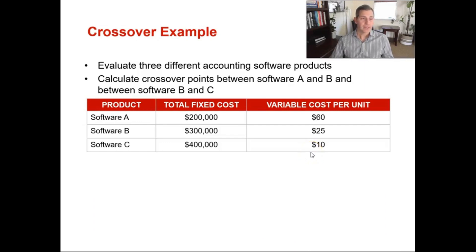Let's do an example together. We're going to evaluate three different accounting software products and calculate the crossover points between software A and B, and then between B and C. Software package A has a total fixed cost of $200,000 and a variable cost per unit of $60. Software B costs $300,000, but with some nice perks so you don't need as many people, and your variable costs are $25. Software package C has $400,000 in fixed costs, but your variable costs go down to $10.